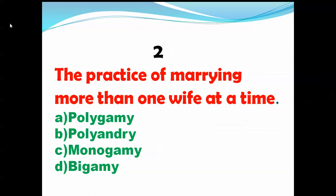The practice of marrying more than one wife at a time — we see: polygamy, polyandry, monogamy, and bigamy. Polygamy means the practice of marrying more than one wife at a time, so the first choice is right. Polyandry means the practice of marrying more than one husband at a time. Monogamy means the practice of marrying only one person at a time. Bigamy means the practice of having two wives or two husbands at a time.